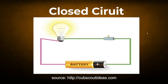Here is a diagram borrowed from the cubscoutideas.com website — thanks for this nice picture. This is known as a closed circuit. You have a battery here that provides the current or the power source coming from the positive to the negative direction. Current always flows in that direction. We have a switch here that will disconnect the cables and turn on the flow of current to this light bulb. The light bulb acts as a resistance — it will absorb the energy and get lit up. And the current will continue to flow back to the battery. So you have a closed circuit.